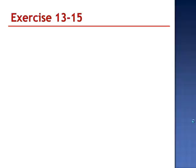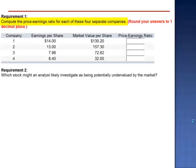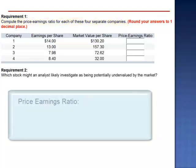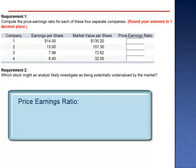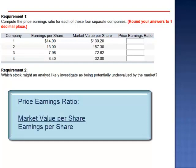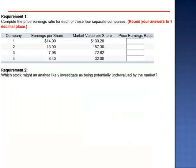Exercise 15. Compute the price-earnings ratio for each of these four separate companies, rounding to one decimal place. The price-earnings ratio is calculated by taking the market value per share and dividing by earnings per share.